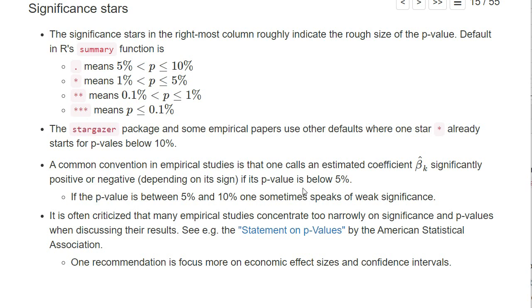A common convention in empirical studies is that one calls an estimated coefficient significantly positive or negative, depending on its sign, if its p-value is below 5% (in R summary function if it has a single star). If it's between 5% and 10%, sometimes one speaks of weak significance.